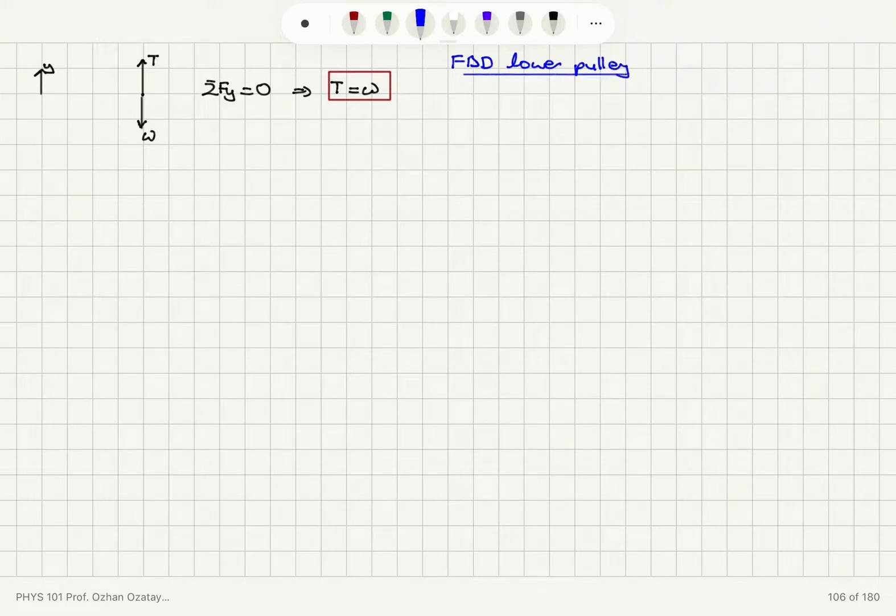So when we draw the free body diagram for the lower pulley, we see that we have W pointing down, which is the tension T, and there are two forces F and F pointing up.